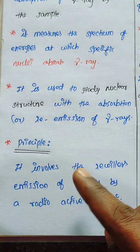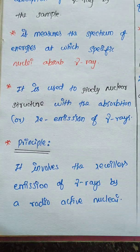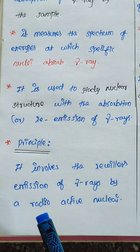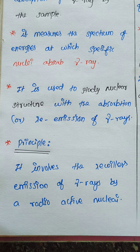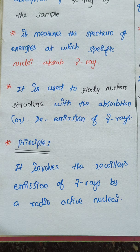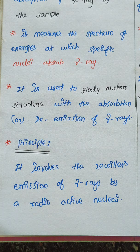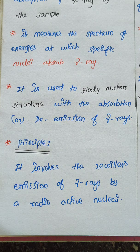The first principle discusses what the recoil effect or recoil energy and Doppler shift are. The first principle involves the recoilless emission of gamma rays by the radioactive nuclei. So the radioactive nuclei emit some amount of gamma rays. The gamma rays then travel to the sample and become involved in the transition.